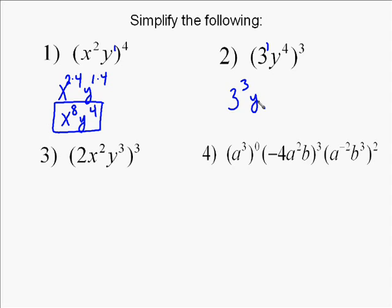The same thing on this next one. 3 is like 3 to the 1st, and so when you raise that whole thing to the 3rd, you've got to multiply 1 times 3 to get 3 to the 3rd. And then you've got to multiply 4 times 3 to get y to the 12th. Now you should evaluate 3 to the 3rd and get it as 27, and that leaves you with the answer of 27y to the 12th.